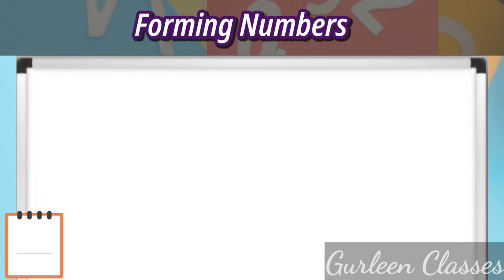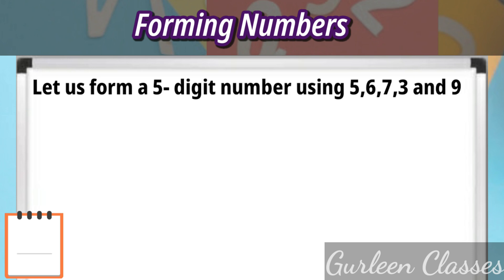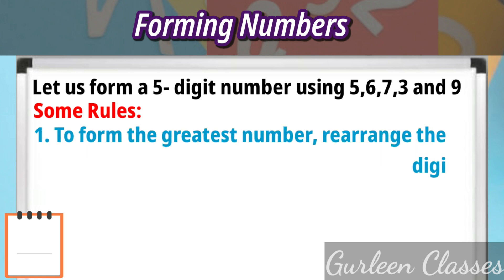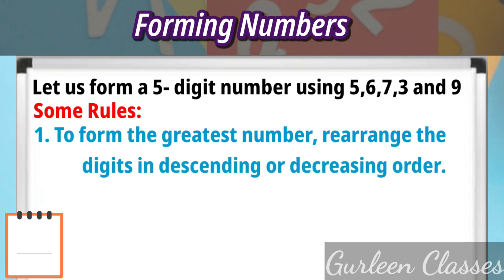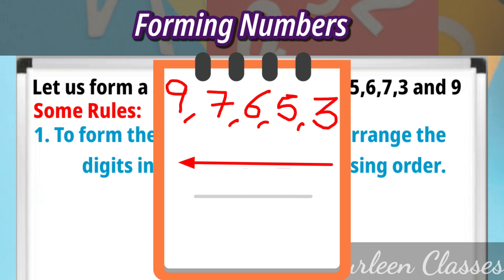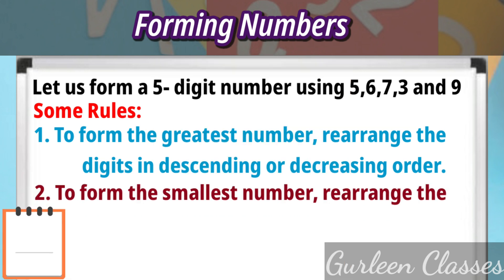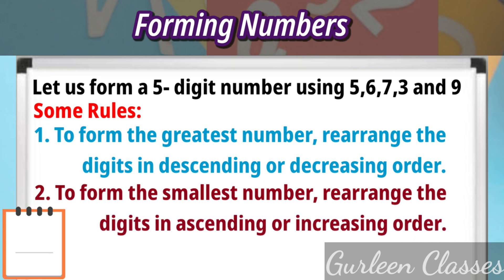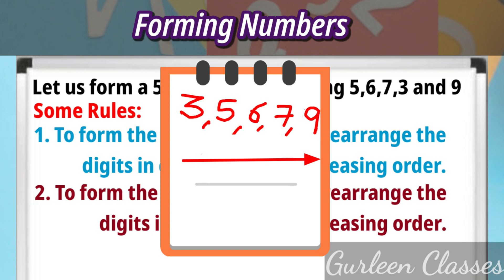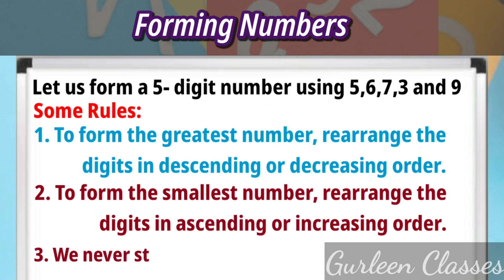Next topic: forming numbers. Let us form a 5-digit number using 5, 6, 7, 3, and 9. Rule 1: to form the greatest number, rearrange the digits in descending order — greatest to smallest. The answer is 97,653. Rule 2: to form the smallest number, rearrange the digits in ascending order — smallest to greatest. The answer is 35,679. Rule 3: we never start a number with 0.